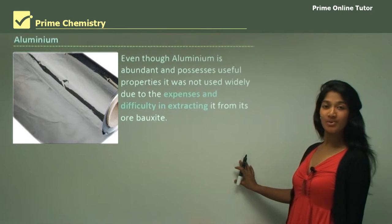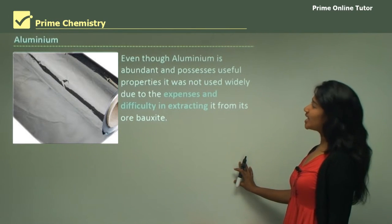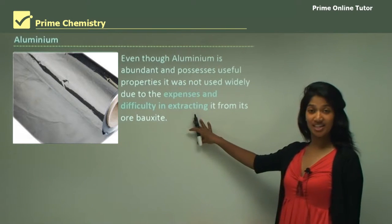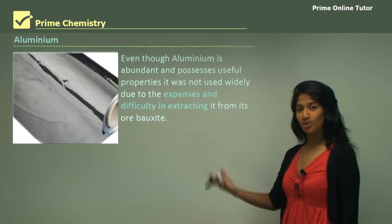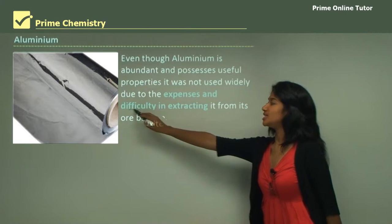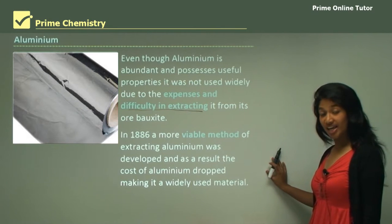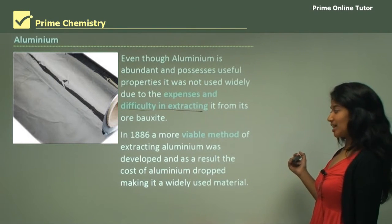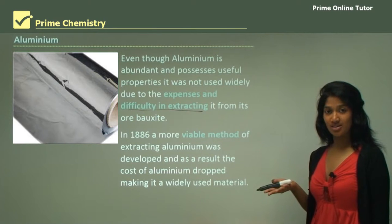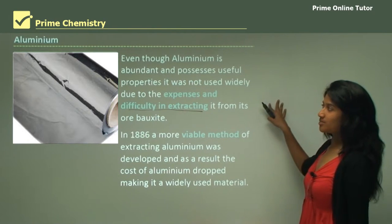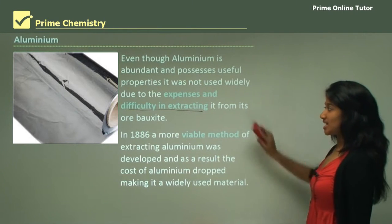Let's move on. We'll start with aluminium. Even though aluminium is abundant and possesses useful properties, it was not used widely due to the expense and difficulty in extracting it. Until the technology improved, aluminium was not retrieved, mainly because it was really difficult to extract from its ore, bauxite. However, in 1886 a more viable method of extracting aluminium was developed, and as a result the cost went down and the uses went up. So you can see how aluminium is a contemporary metal because it was only extracted in the later centuries.